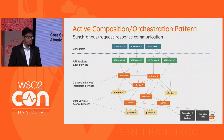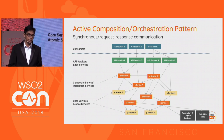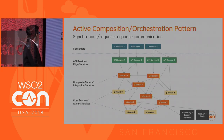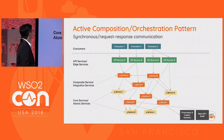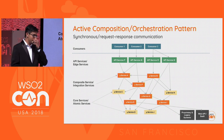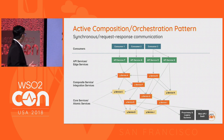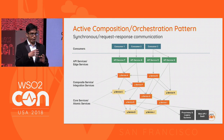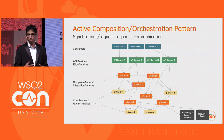The first pattern is active composition, or the orchestration pattern. In this pattern, we identify microservices with different granularities. We can identify three different types of microservices. The first is core services, or atomic services. Those services primarily address a specific business capability and don't talk to many external systems — they are self-contained services.